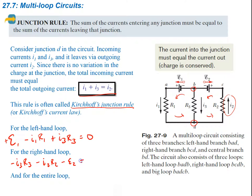We can also write a loop equation for the entire circuit. Starting at epsilon 1 and going around to the left — going with the EMF gives positive epsilon 1. The first resistor going with the current is negative, minus I1*R1. Then R2 going with the current is also negative, minus I2*R2. Then we hit the second EMF device going in the opposite direction — also negative, minus epsilon 2 — set equal to zero.